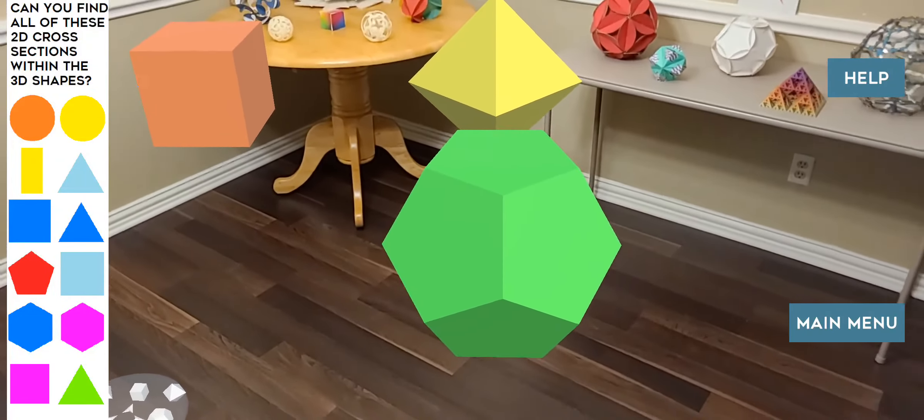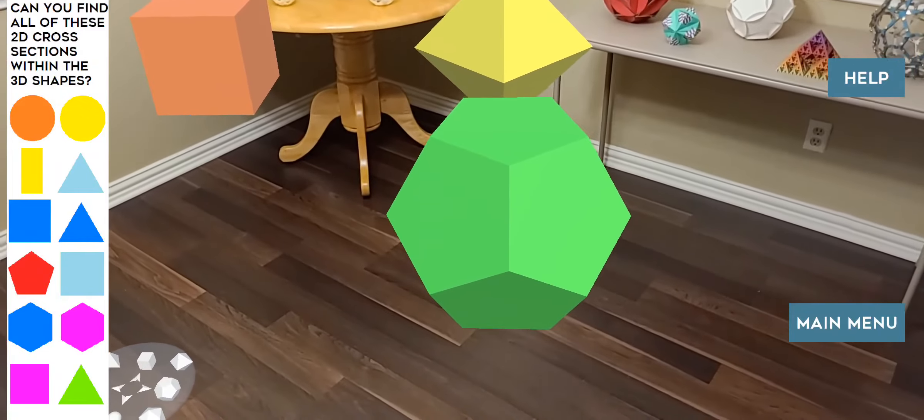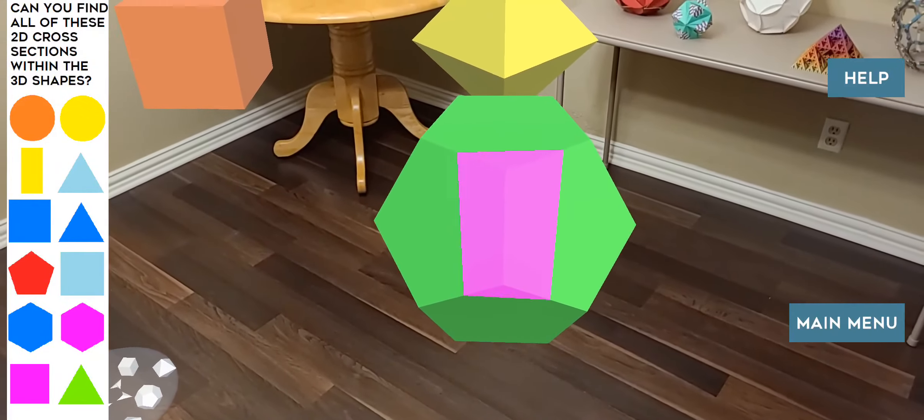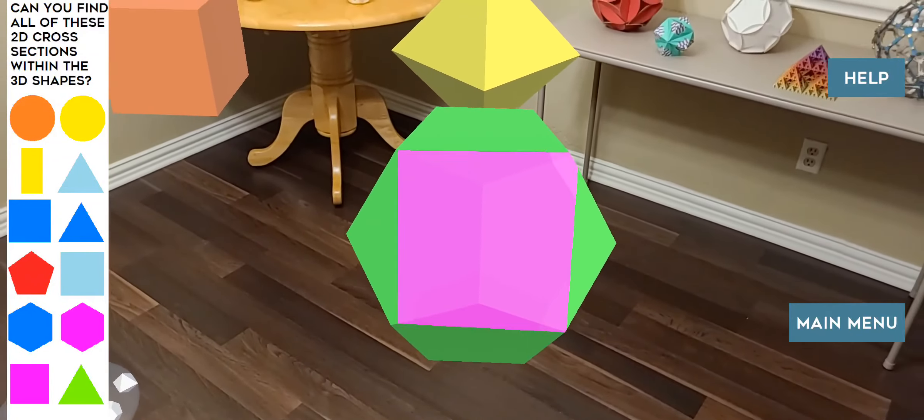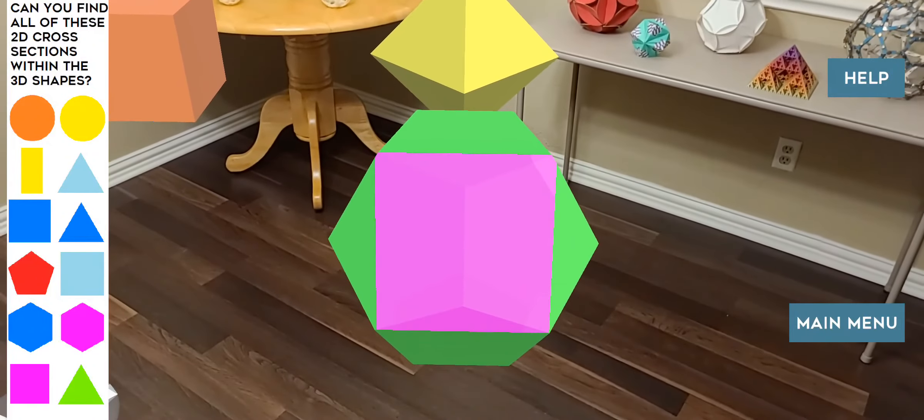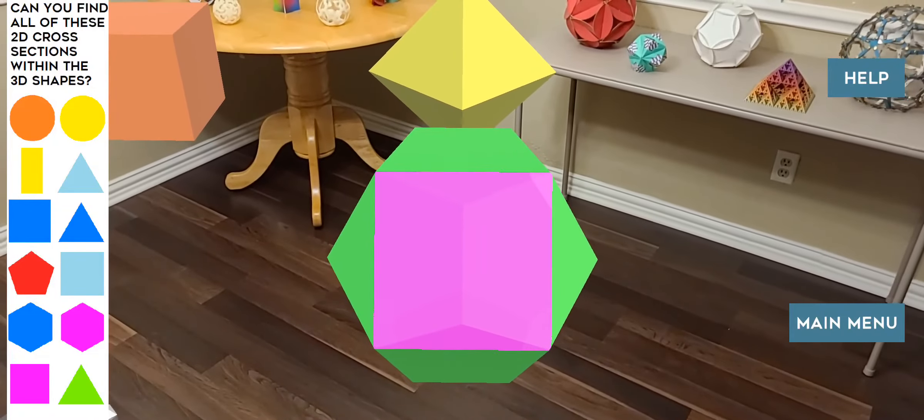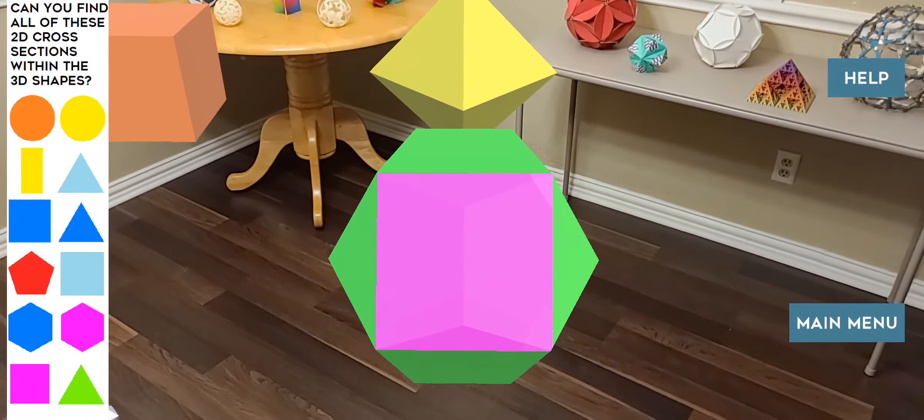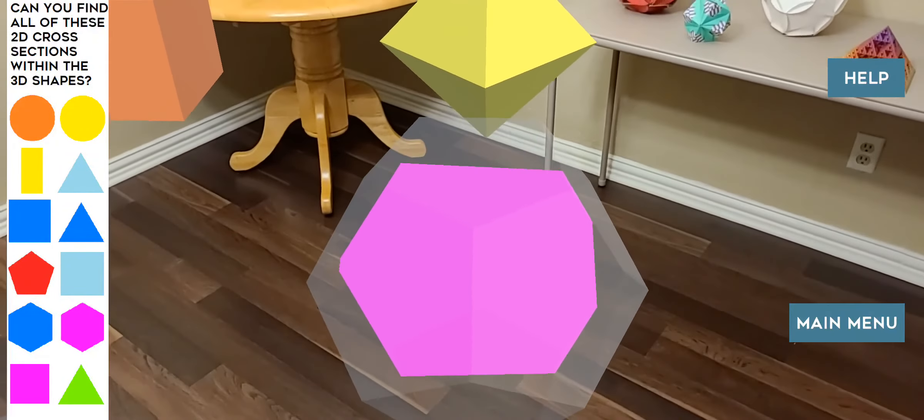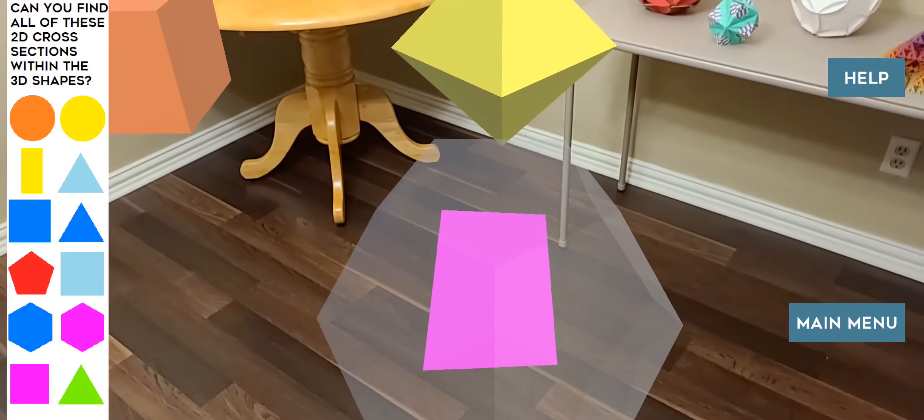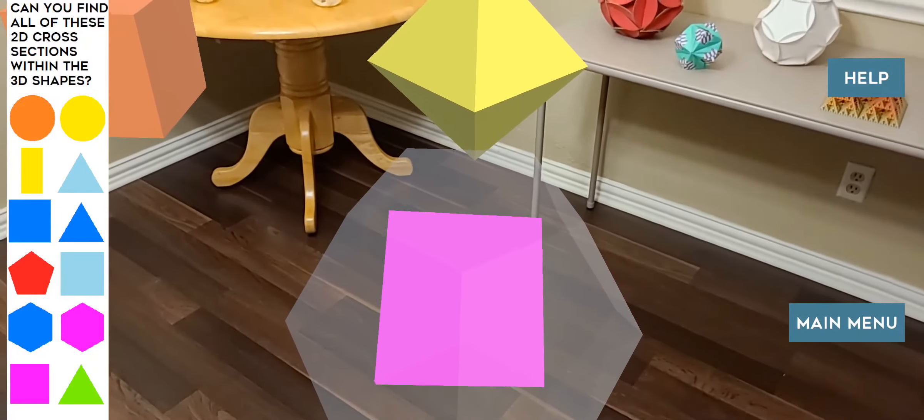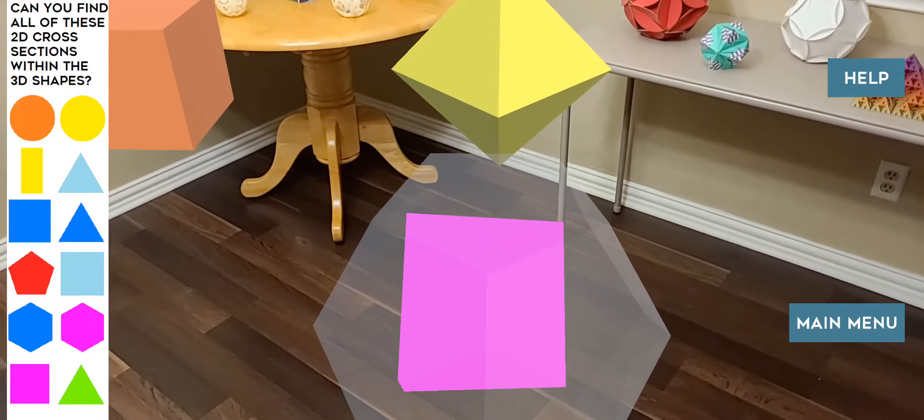As we zoom into this dodecahedron, we'll notice that we do get a pink square if you approach from just the right angle. Amazing! I would never have expected a square to be inside of the dodecahedron. And we'll see one on the opposite side too. Nice symmetry there.